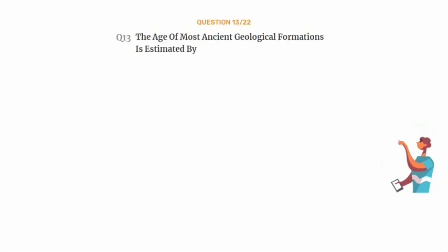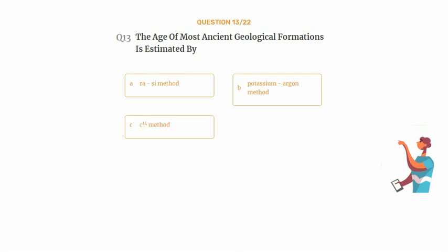Question number 13. The age of most ancient geological formations is estimated by. Option A: Ra-C method. Option B: Potassium-Argon method. Option C: C-14 method. Option D: Uranium-Lead method.